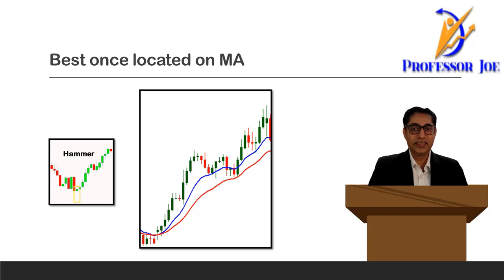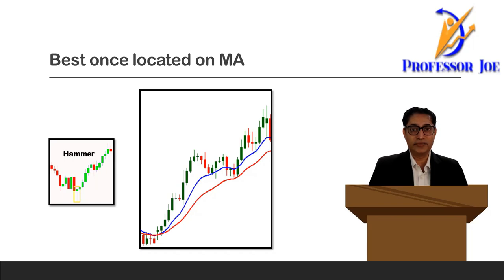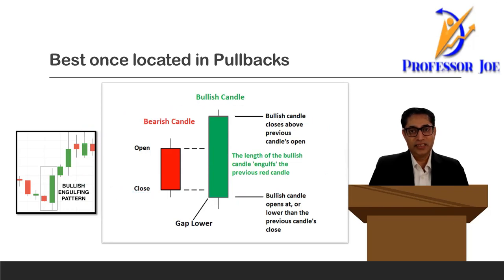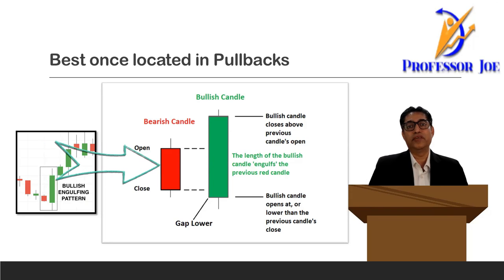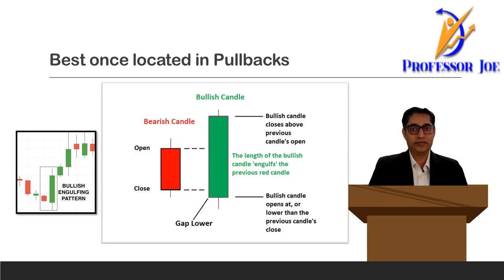Now let us look at the second type of candlestick which is very useful when you want to enter a buy trade. This candlestick is called the bullish engulfing candle. There is a previous downtrend or a small downtrend and then a big green candle has been created. This green candle will be bigger than the previous couple of bearish candles, or at least bigger than the last bearish candle. If it is bigger than the previous two or three bearish candles, it is a clear indication that the bulls have taken control and are now pushing the price up.